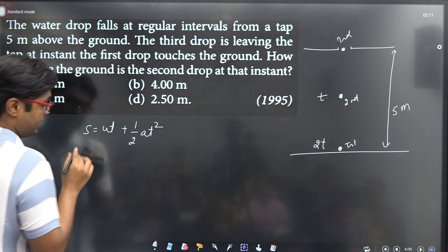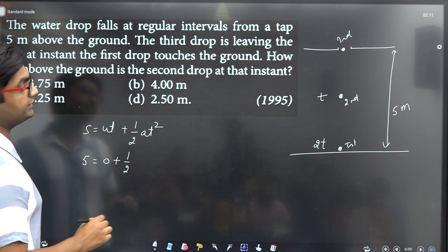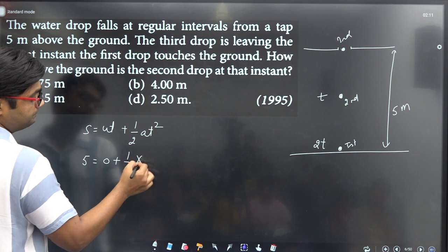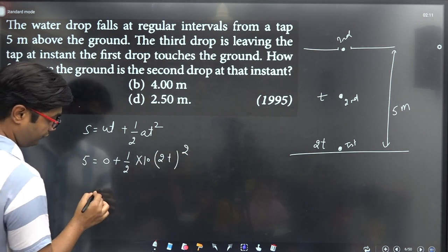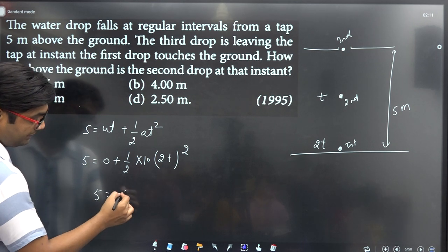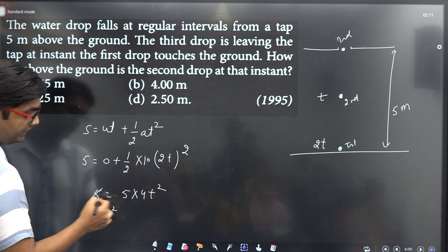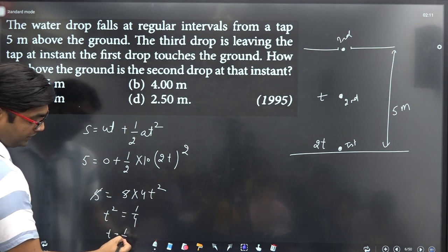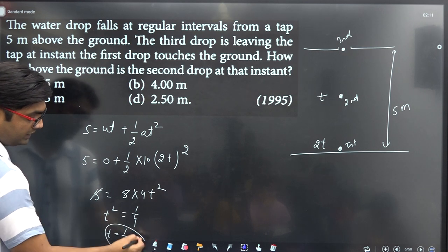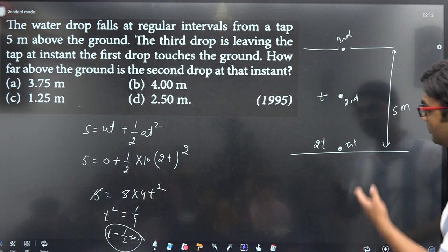The distance is 5 meters, initial velocity u = 0, acceleration a = 10 m/s². Using s = ut + 1/2 at², we get: 5 = 0 + 1/2 × 10 × t². So t = 1 second.